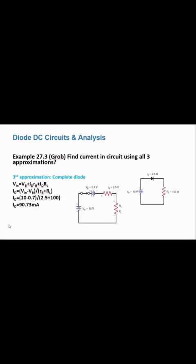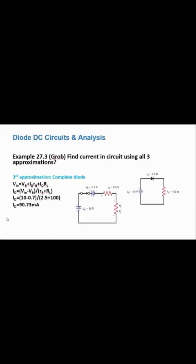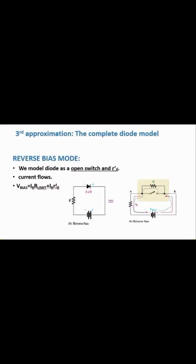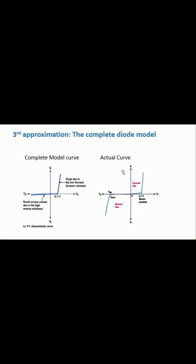The complete model result of 90.73 mA is the most accurate since its graph is nearest to the actual curve. If the battery terminals were reversed so the diode was reverse biased: in the ideal diode model the current would be zero; in the practical diode model the current would also be zero (open switch); but in the complete diode model, the reverse current equation is used to find a small non-zero reverse current.